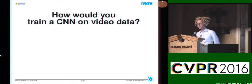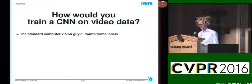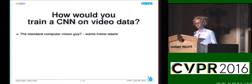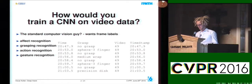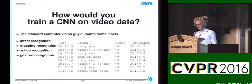How would you train a CNN on video data? The typical computer vision person would probably want frame labels to train a classifier. But this type of annotation is not very appropriate and is very time consuming to produce. If you look at recent datasets in affect recognition, grasping recognition, action recognition, or even gesture recognition, most of it actually comes with frame labels.